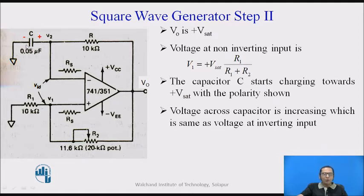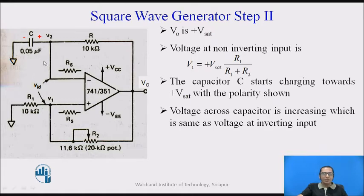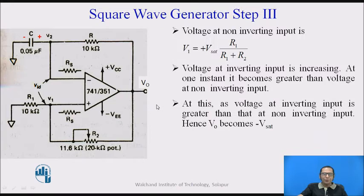Meanwhile, the capacitor C starts charging towards plus-Vsat with the polarity shown — positive on one side and negative on the other. So the voltage across capacitor C starts increasing in the positive direction, which is the voltage at V2. The situation is: V1 is fixed at plus-Vsat × R1 / (R1 + R2), while V2 is slowly rising towards plus-Vsat. At some instant, the voltage V2 becomes just greater than V1.